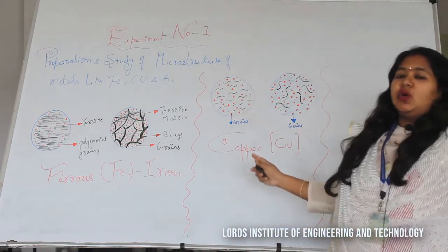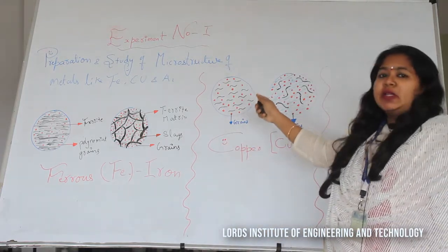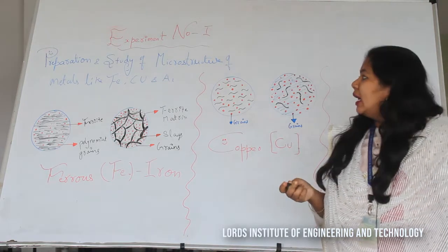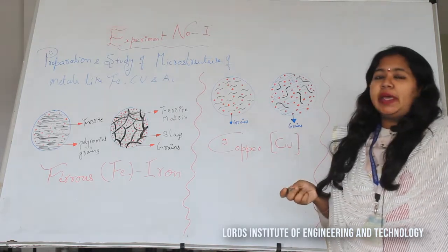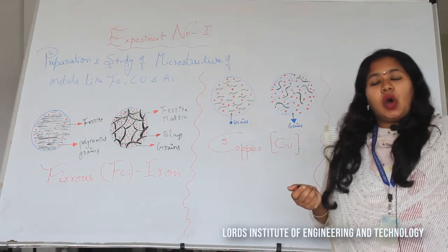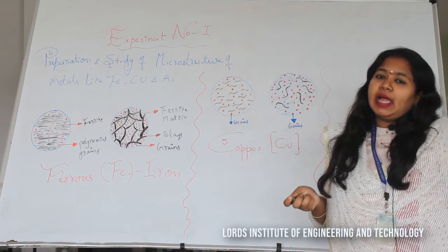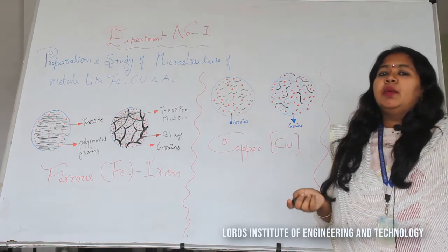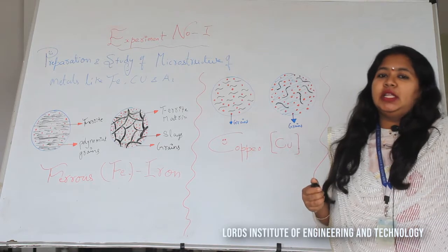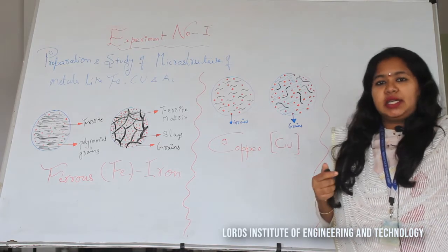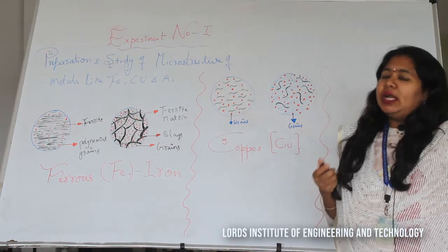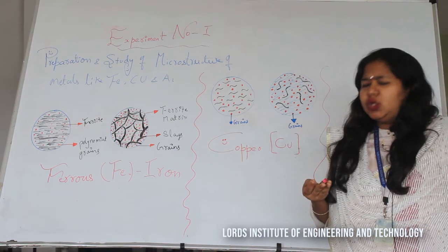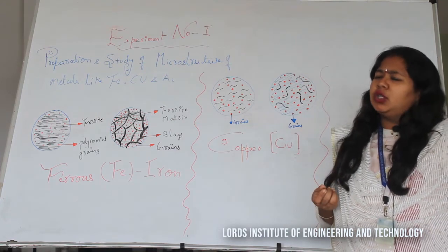The first experiment we will focus on is the preparation and study of microstructure. We are going to prepare and study the microstructure of iron, copper, and aluminium — three pure metals that are available in the earth's crust.